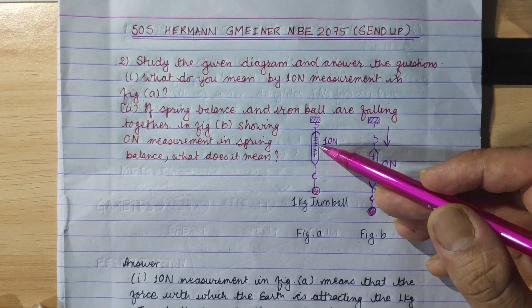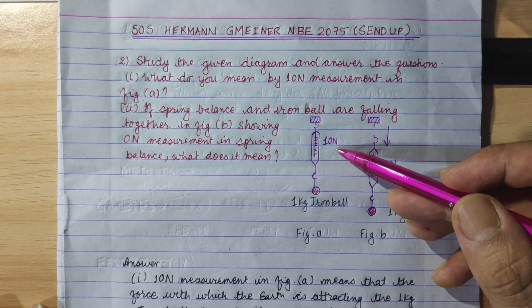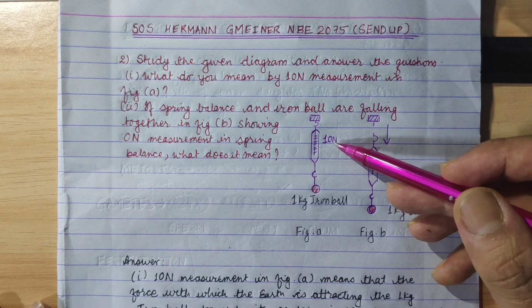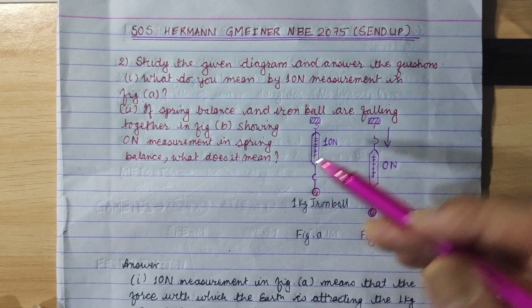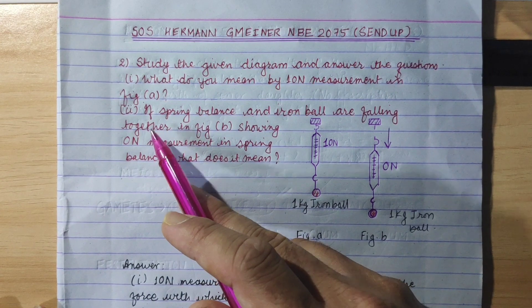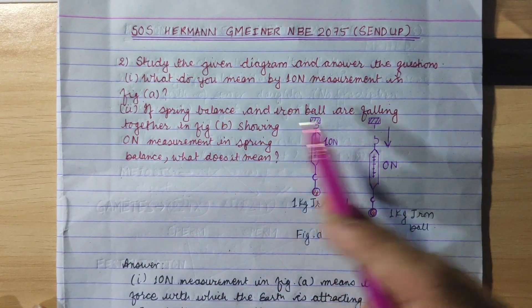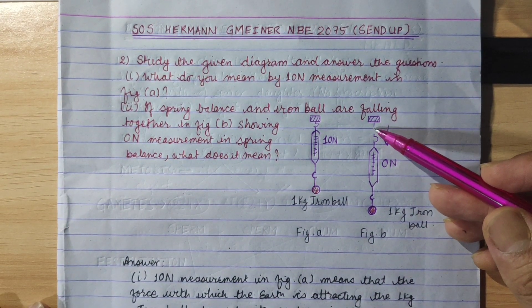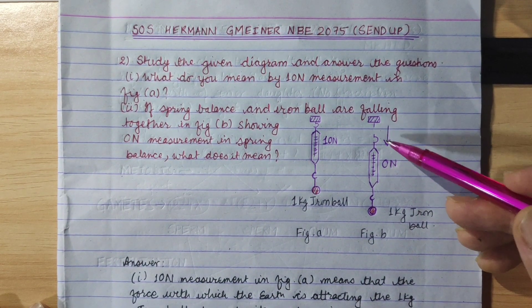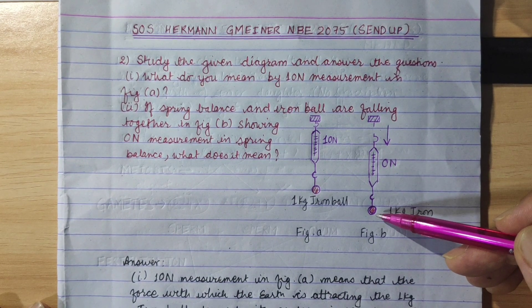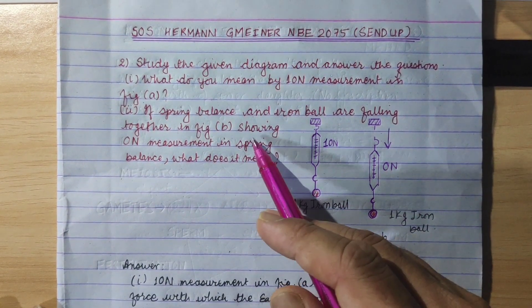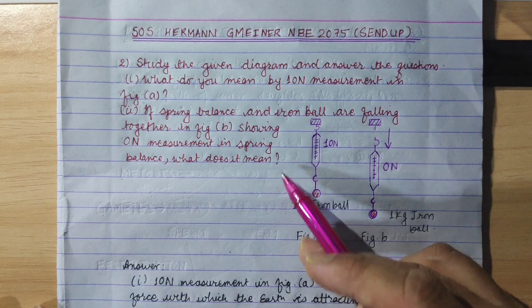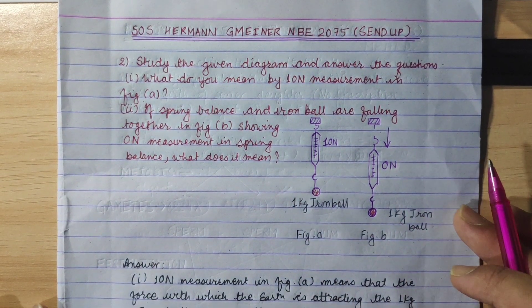Spring balance and iron ball are falling together in figure B, showing 0 Newton measurement. What does it mean? What do you mean by the answer?